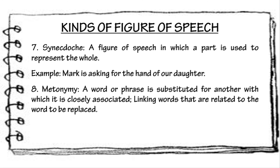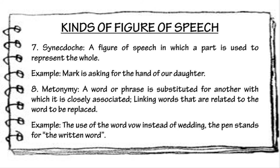Metonymy is a word or phrase that is substituted for another with which it is closely associated, linking words that are related to the word to be replaced. Metonymy means change of name. As a literary device, it is a way of replacing an object or idea with something related to it instead of stating what is actually meant. Example: The use of the word 'vow' instead of 'wedding,' and 'the pen' standing for the written word.